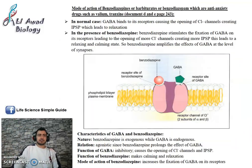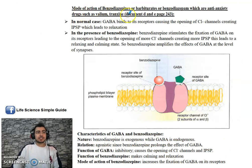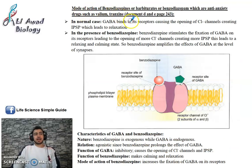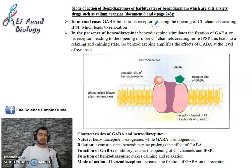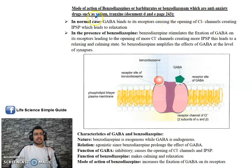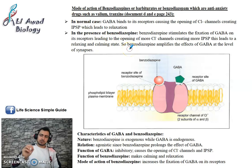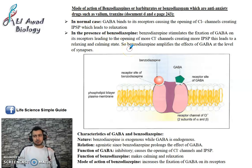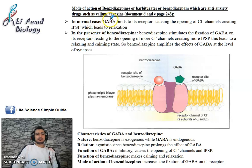The third drug is benzodiazepines or barbiturates — for example, Valium. These are anti-anxiety drugs used as antidepressants. In the normal case, you have a neurotransmitter called GABA.